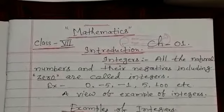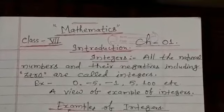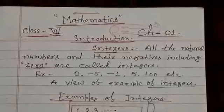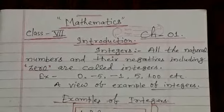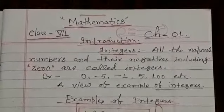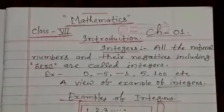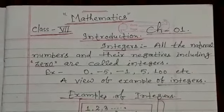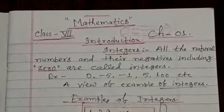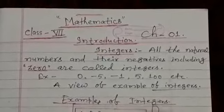Now let us start Chapter 1. Children, we are familiar with natural numbers as 1, 2, 3, etc. These are counting numbers. Now consider negatives of natural numbers like minus 1, minus 2, minus 3, etc. 0 is a unique digit which is neither negative nor positive.